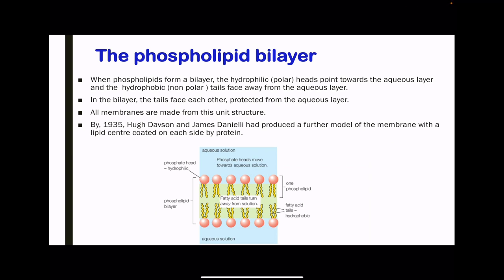Moving on to the phospholipid bilayer. The bilayer is made of phospholipids on either side, with an aqueous layer on each side. The hydrophilic heads are inclined towards the aqueous layer on either side, while the phospholipid tails that are hydrophobic are inclined towards each other. In this bilayer, the tails face each other, protected away from the aqueous layer.